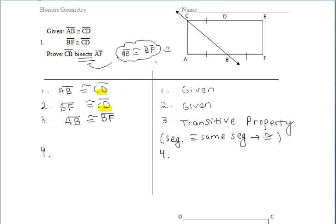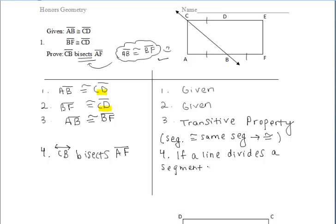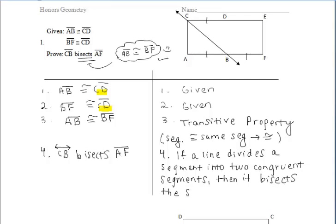We've reached where we wanted to be — AB and BF are congruent. So now we can say that line CB bisects segment AF. The reason being, we need an if-then statement: if a line divides a segment into two congruent segments — which is what we established by saying AB is congruent to BF — then it bisects the segment. Since we wanted to prove bisection, that should be the last thing we mention in our proof, after the 'then' statement.